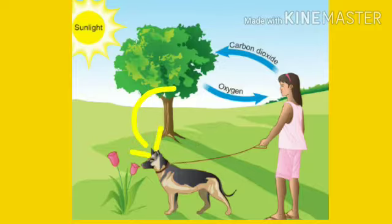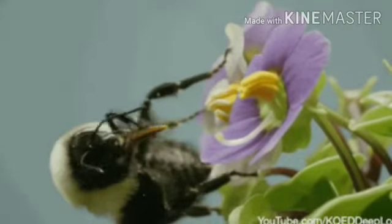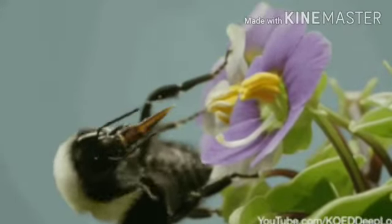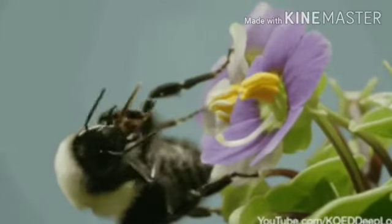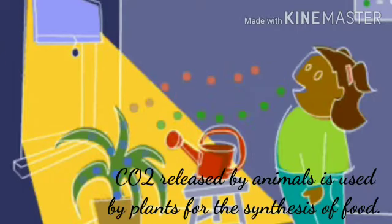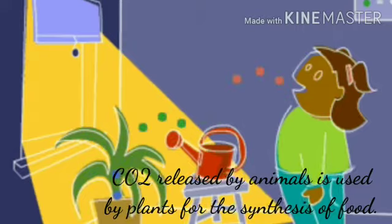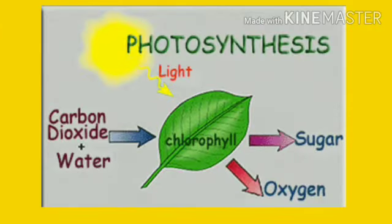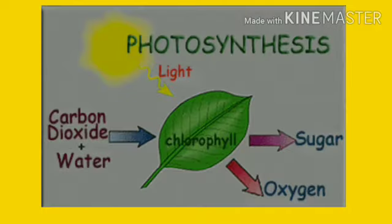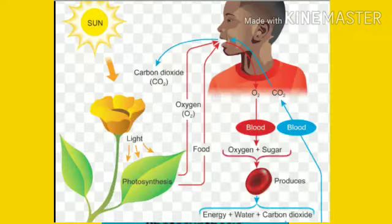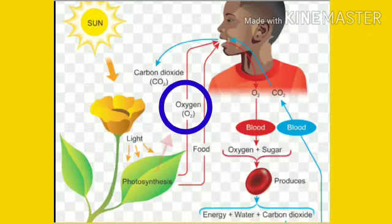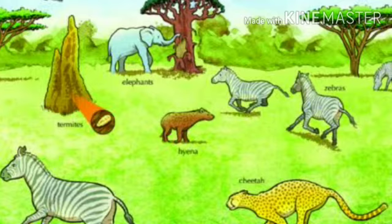In nature, plants and animals, or the biotic components, interact with each other to fulfill their requirements. For example, carbon dioxide released by animals is used by plants for the synthesis of food. In turn, plants release oxygen during the process of photosynthesis, which is the life supporting gas for all organisms.